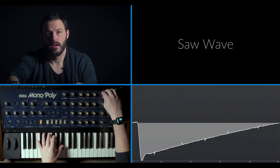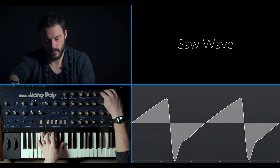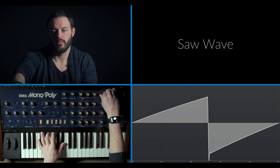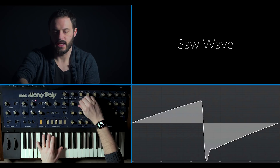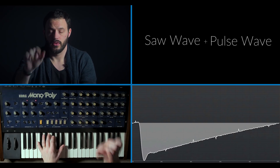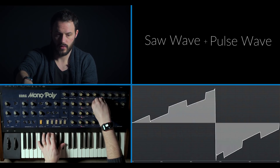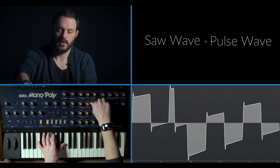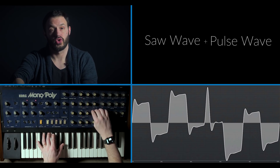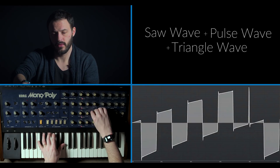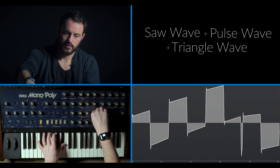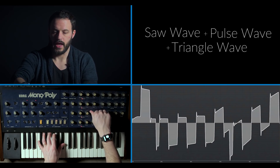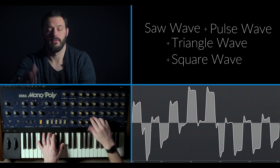Let's start with a saw wave. We're going to add in some pulse wave. We're going to add a triangle down below. And we'll finish it off with some square wave.